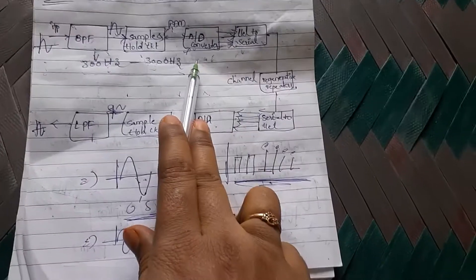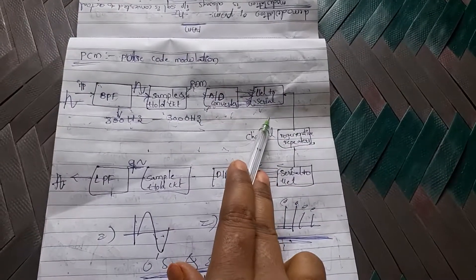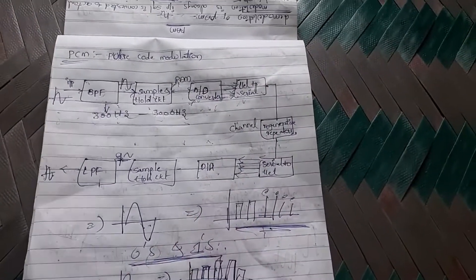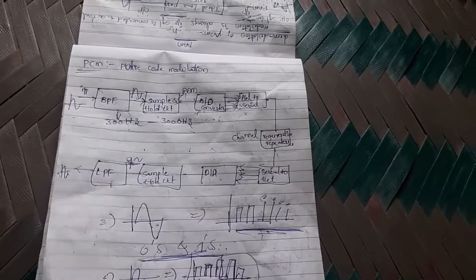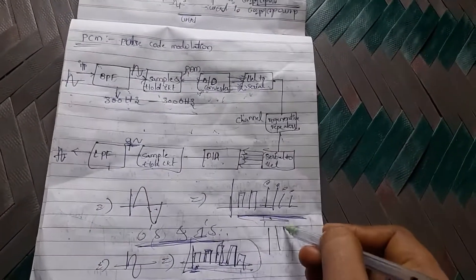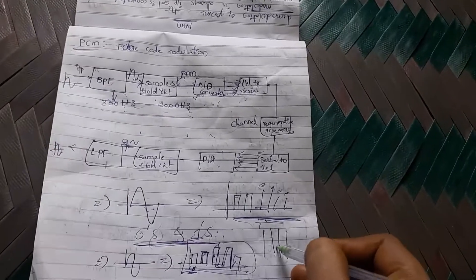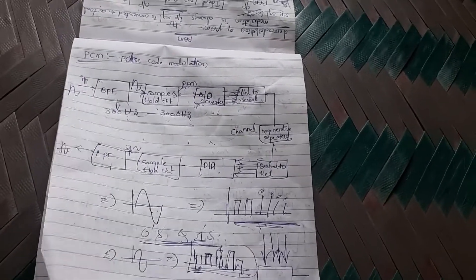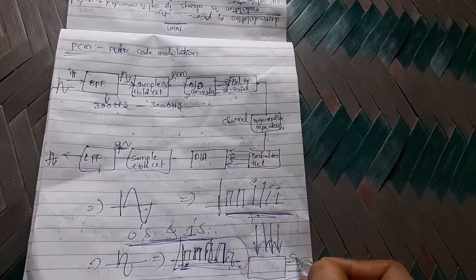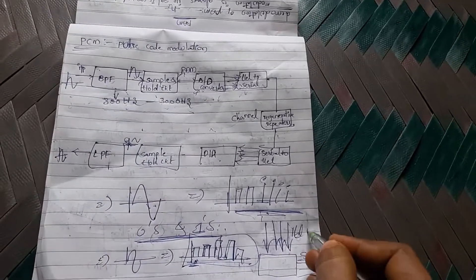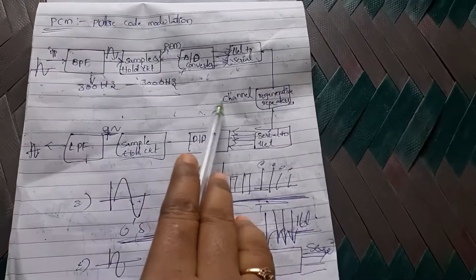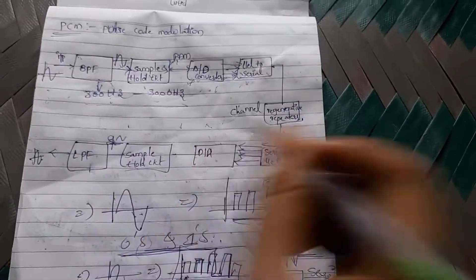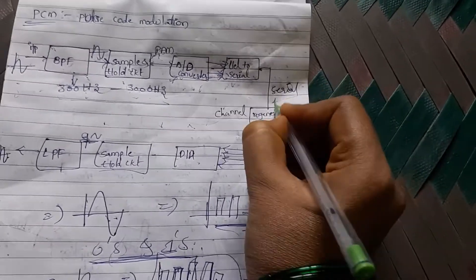The multi-level parallel PAM signals are given to the Parallel to Serial converter. Parallel transmission sends data simultaneously on multiple lines, while serial transmission sends data one bit at a time. The Parallel to Serial converter converts the parallel codes into serial format, giving us the serial PCM output.